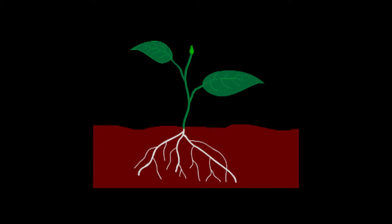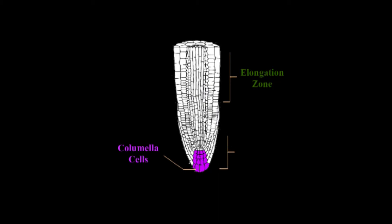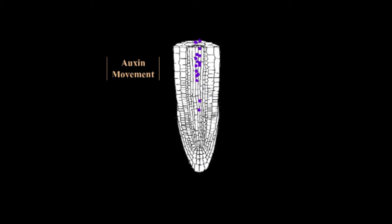Roots have positive gravitropism, therefore a downward response. Natural root growth occurs in the elongation zone of the root itself. When gravity is sensed in the root tip, a morphological response is triggered in the elongation zone. The amyloplasts within statocytes located in the columella cells of the root are responsible for gravity detection, due to their high density and relatively large mass. Therefore, they occupy the lowest point of the statocyte. Consequently, when gravity is detected, these amyloplasts sediment along the columella cell differently.